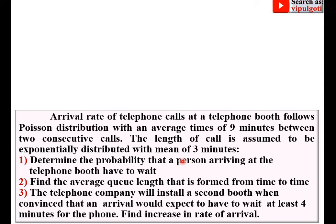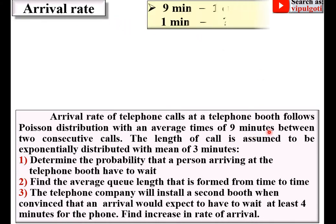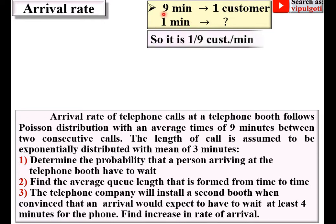It is given that the arrival rate follows Poisson distribution with an average time of 9 minutes. That means 9 minutes for one customer. So if we want to find how many customers per minute, it is simply 1 divided by 9. That is your arrival rate, denoted by lambda (λ = 1/9).